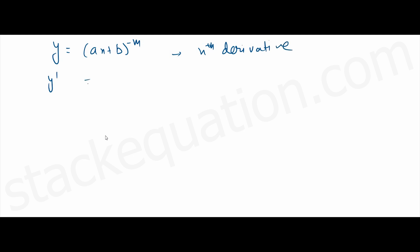If I find the first derivative, it's minus m into (ax + b) to the power minus m minus 1, into the differentiation of (ax + b), that is a.